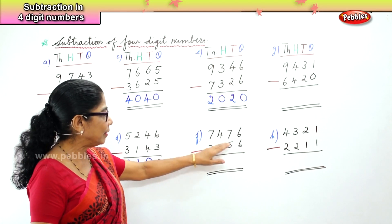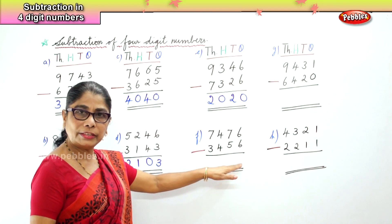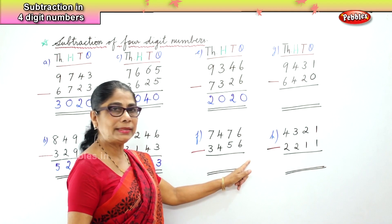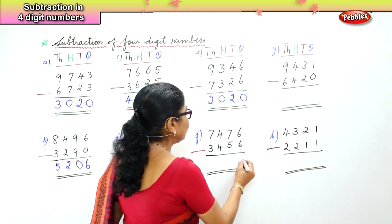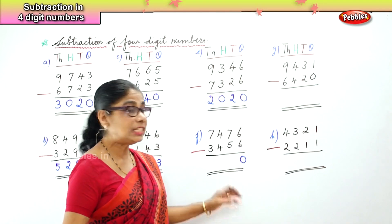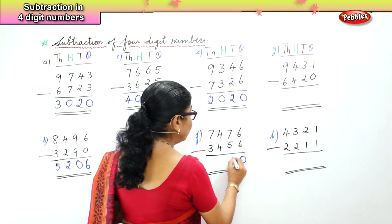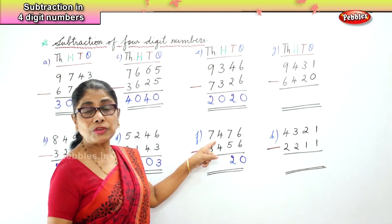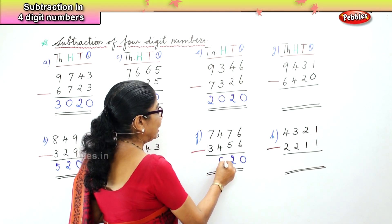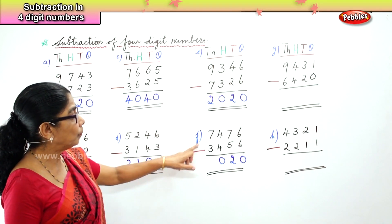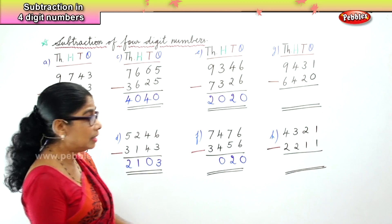Let's come to another sum: 7,476 take away 3,456. In the ones place, 6 ones minus 6 ones — 6 take away 6 is 0. In the tens place, 7 tenths minus 5 tenths — 7 minus 5 is 2. In the hundreds place, 400 minus 400 — 4 take away 4 is 0, any number take away the same number is 0. In the thousands place, 7,000 minus 3,000 — 7 minus 3 is 4.